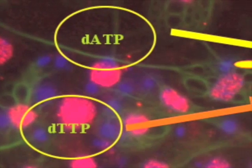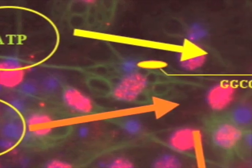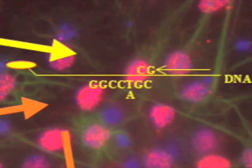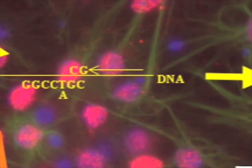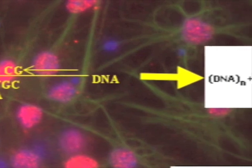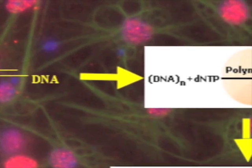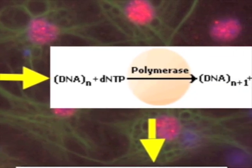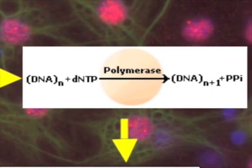Pyrosequencing is based on sequencing by synthesis, taking advantage of the release of pyrophosphate whenever a nucleotide is incorporated in an open 3' DNA strand.